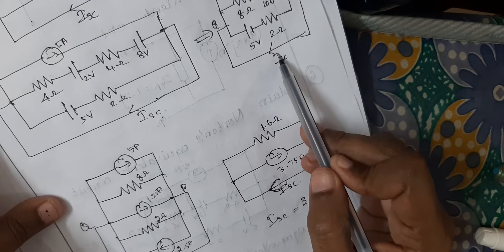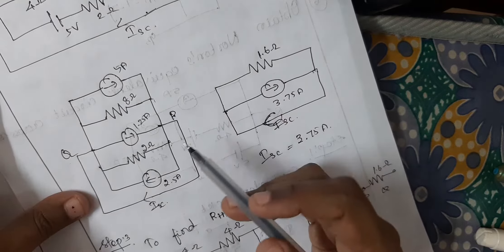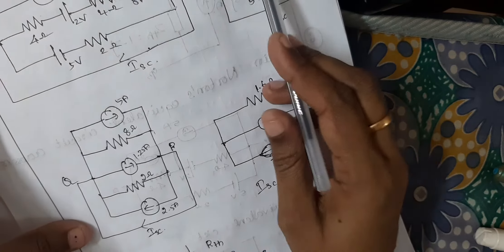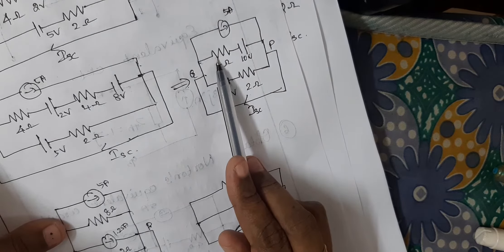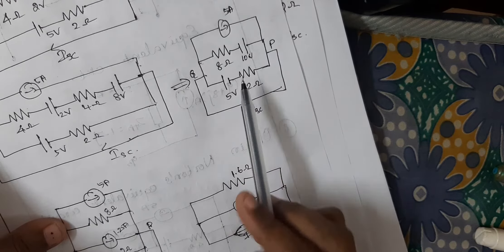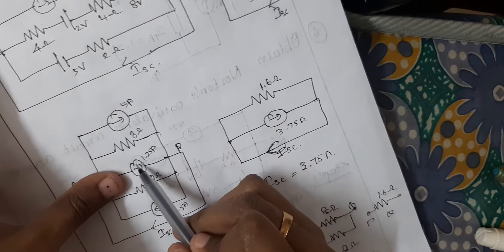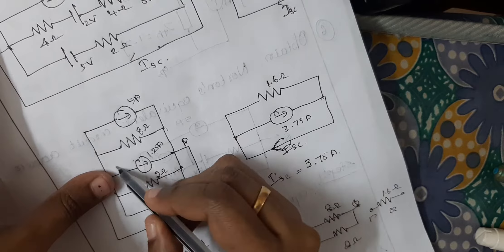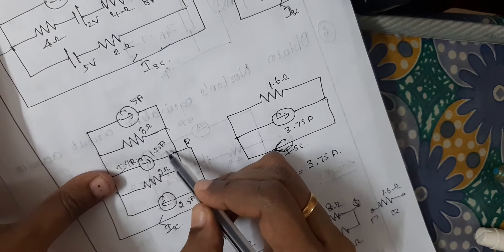Now you want to find the short circuit current. There is one current source. The voltage source is series with the resistor — you can convert this to a current source parallel with the resistor. I is equal to V by R, that is 10 by 8, which equals 1.25.